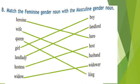You have to match these words with their male gender equivalents. Heroine — Hero. Wife — Husband. Queen — King. Girl — Boy. Landlady — Landlord. Hostess — Host.